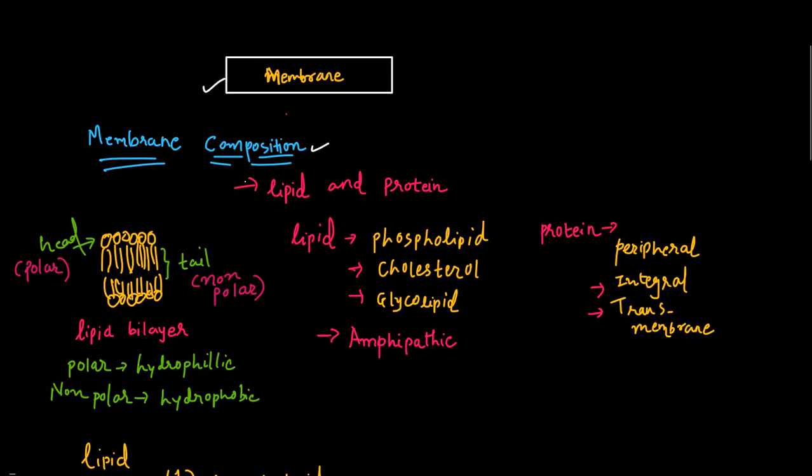The structure of the membrane is made up of lipid and protein molecules. In this figure, the structure of the membrane is depicted here. It consists of the lipid bilayer. There are two parts of this layer.